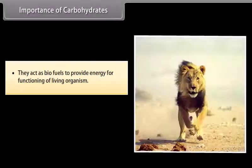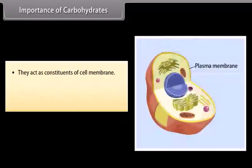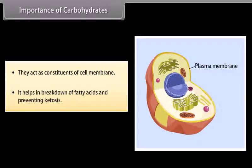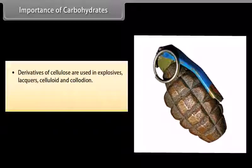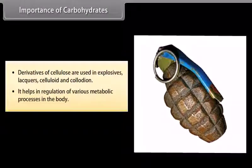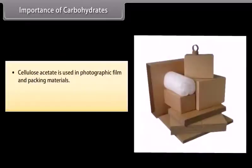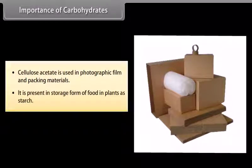Carbohydrates act as biofuels to provide energy for functioning of living organisms. They act as constituents of cell membranes and help in breakdown of fatty acids, preventing ketosis. Derivatives of cellulose are used in explosives, lacquers, celluloid and collodion. They help in regulation of various metabolic processes in the body. Cellulose acetate is used in photographic film and packing materials. Carbohydrates are present as storage food in plants in the form of starch.